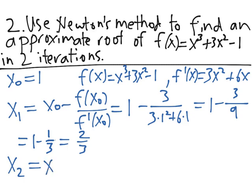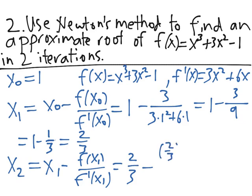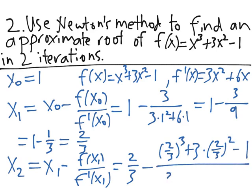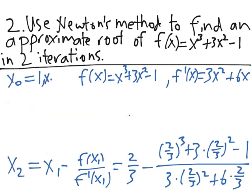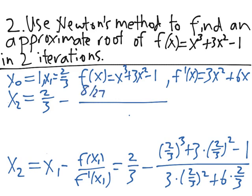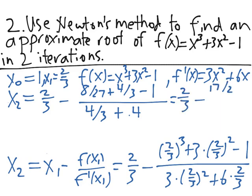x₂ = x₁ − f(x₁) / f′(x₁), where x₁ = 2/3. This gives x₂ = 2/3 − [(2/3)³ + 3·(2/3)² − 1] / [3·(2/3)² + 6·(2/3)], which is 2/3 − [8/27 + 4/3 − 1] / [4/3 + 4].